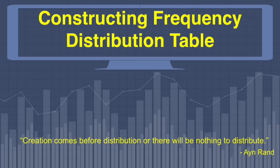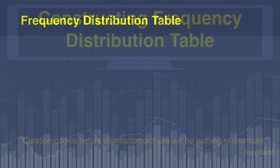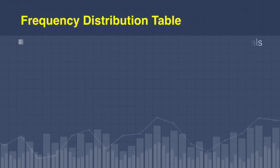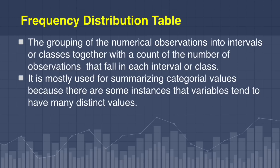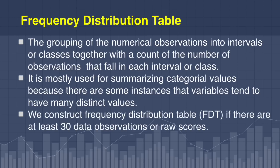Let us define first what is a Frequency Distribution Table. A Frequency Distribution Table is the grouping of numerical observations into intervals or classes together with the count of the number of observations that fall in each interval or class. It is mostly used for summarizing categorical values because there are some instances that variables tend to have many distinct values.